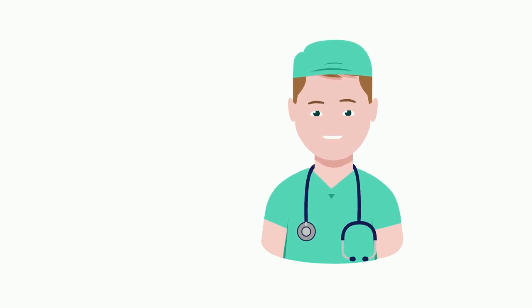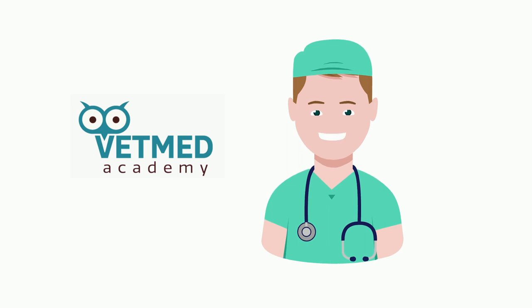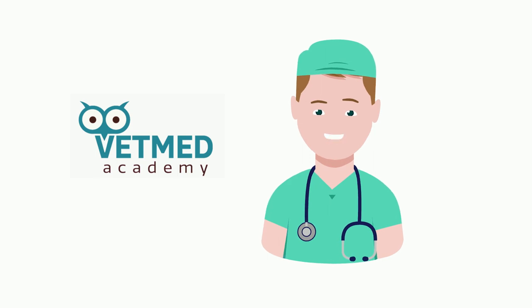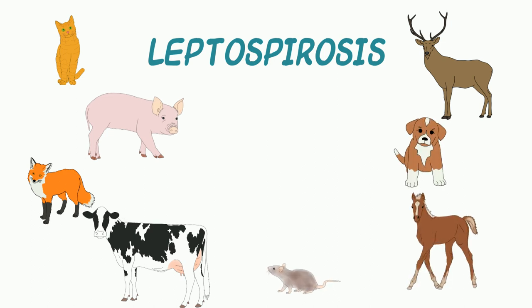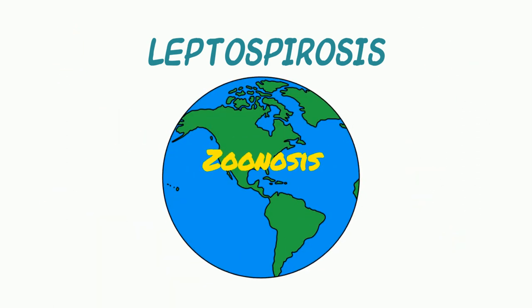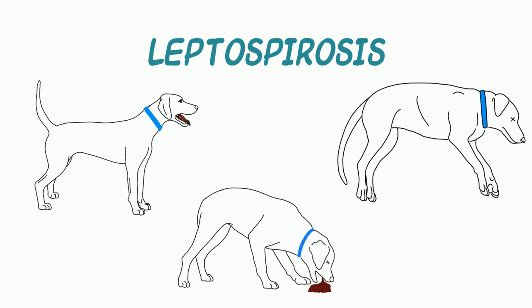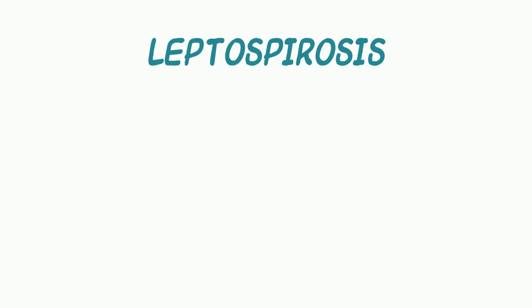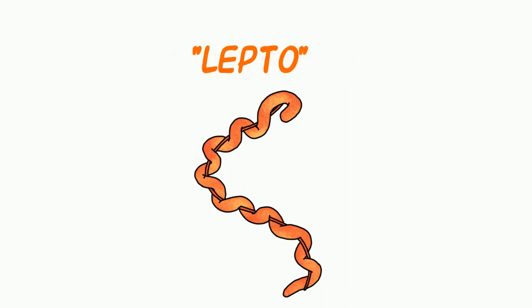Howdy, buckaroos. It's time for another adventure in zoonosis with the VetMed Academy. Today, we're going to be discussing leptospirosis — a disease that can affect virtually all mammals, including man. As such, it is called a zoonosis and is seen around the world. The disease can cause anywhere from a mild subclinical infection to death due to organ failure. It is caused by infection with pathogenic species of leptospira, which we'll call lepto for short.